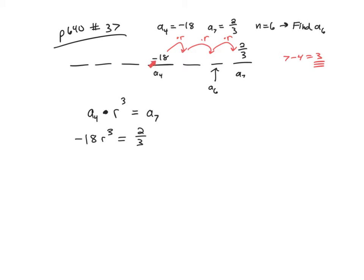That's what this means. I start with negative 18, and I multiply by r, by r, by r, and I should get two-thirds. So we really just need to simplify and solve this expression.